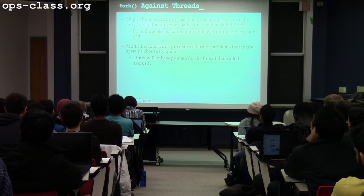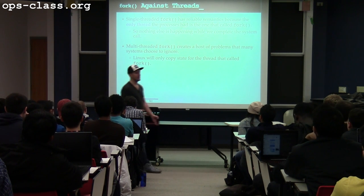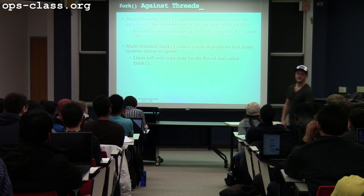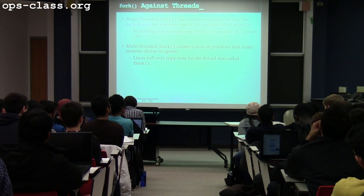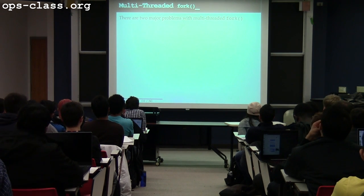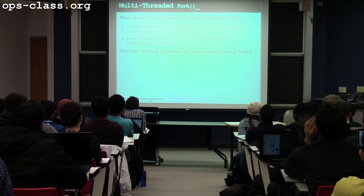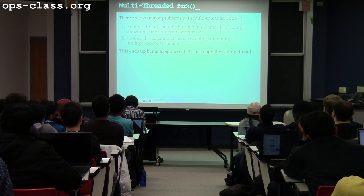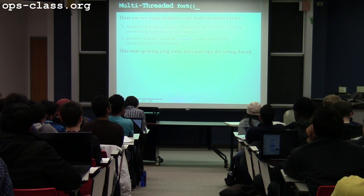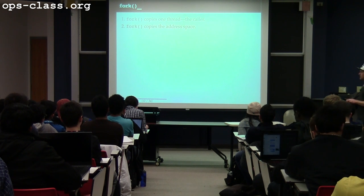If you want to create threads in the child process after you call fork — say the parent has eight threads and the child wants eight threads — the child starts off as one thread, so what does the child have to do? Call clone, which is the fork equivalent that creates new threads. It's just up to the child to do this itself. So fork copies one thread — the caller — it copies the address space, and it copies the process file table.